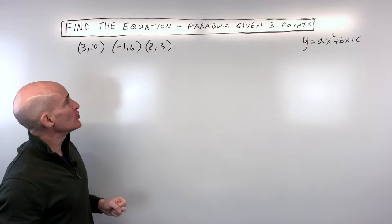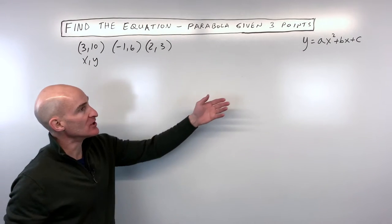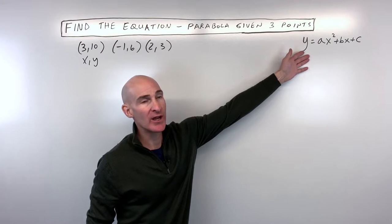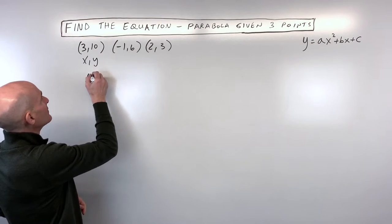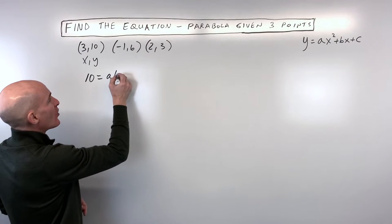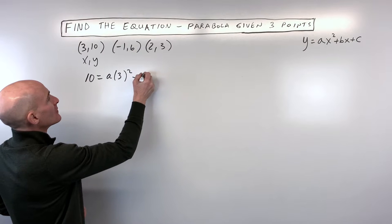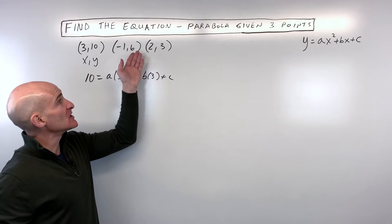So what we're going to do is take each of these points individually and make an equation using our quadratic equation here. You can see that when y is 10, x is equal to 3. So I'm just substituting in our x and y and I'm going to make an equation using each one of these points.